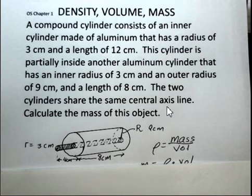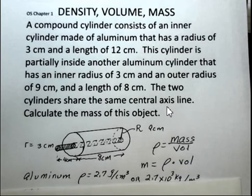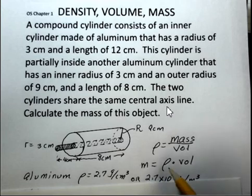So let's get started on this. The mass is density times volume. We're going to look up the density of aluminum.